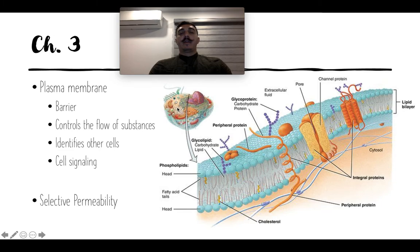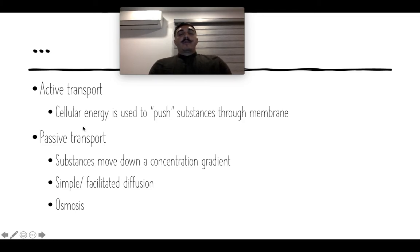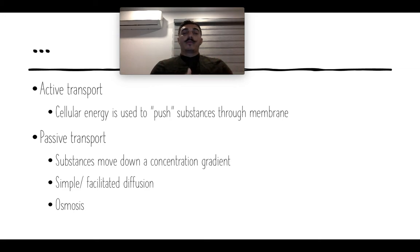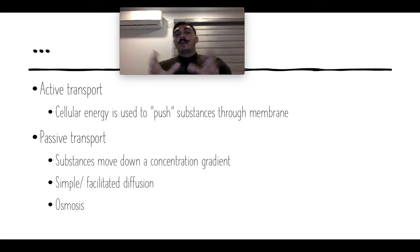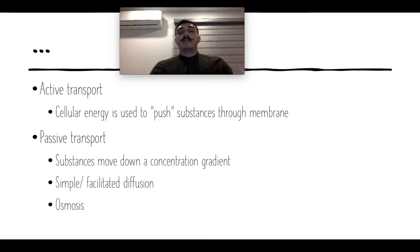We won't get into detail on all the different organelles like mitochondria and Golgi apparatus right now. Through the membrane, we have active transport and passive transport. Active transport requires energy — cellular energy is used to push substances through a membrane. Passive transport is when things can go through without energy — if a substance matches what the protein allows, it just goes through passively. They mainly move down a concentration gradient; if there's a lot outside and little inside, stuff will move in to reach balance.